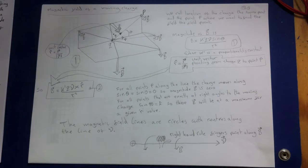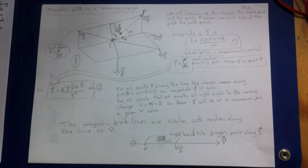In our study of electric fields we found that E, the electric field of a point charge Q at a field point located a distance R from the charge, is proportional to Q and to the inverse square 1 over R squared. Its direction for positive Q is along the line from the source point to the field point. The corresponding relationship for the magnetic field B of a point charge Q moving with velocity V has some similarities to this relationship and some interesting differences.